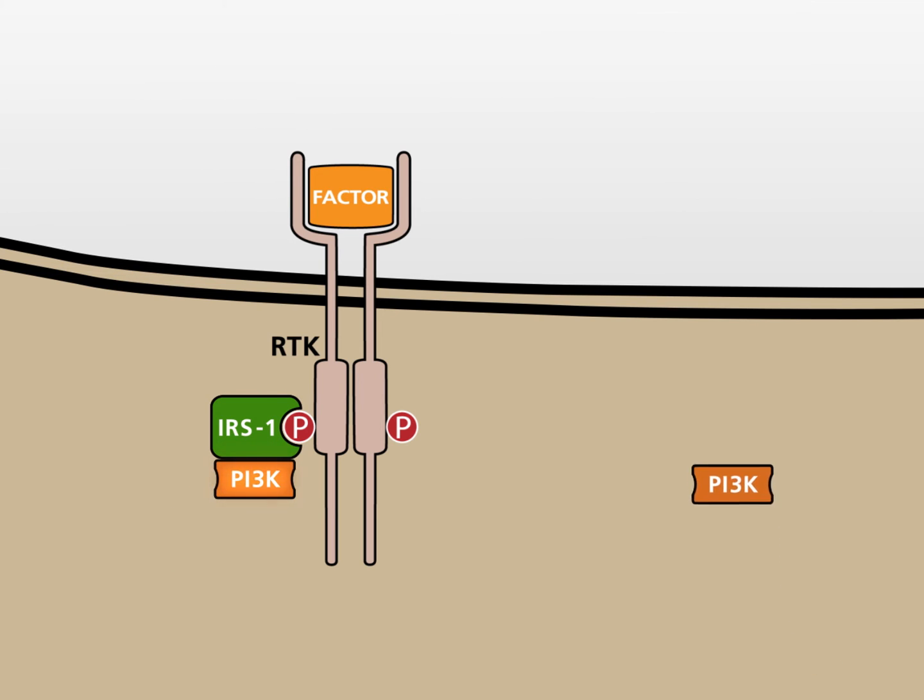In addition, PI3 kinase may bind directly to a phosphorylated receptor tyrosine kinase. A completely different mechanism of PI3 kinase activation begins with the small membrane-bound GTPase RAS. By binding to active GTP-bound RAS, PI3 kinase is activated.